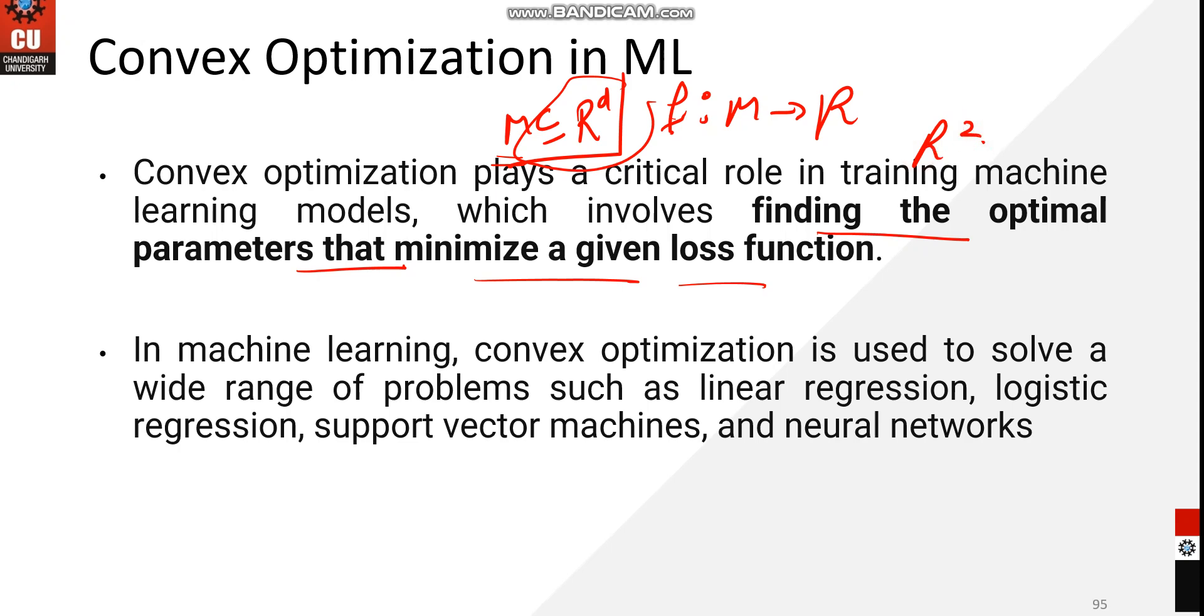If we are writing that f is a function from m to the real entity, and m is a subset of R raised to power d, where R is simply space with having certain dimensions. For example, if we are writing R square, it means it is a two-dimensional space. We have simply upgraded the d dimensions to a certain value.